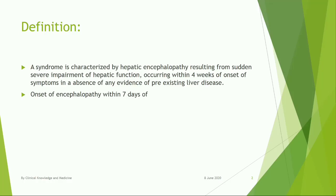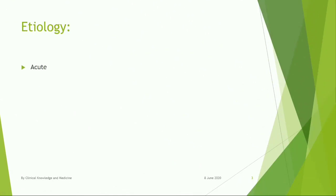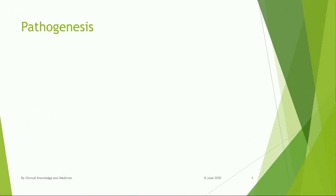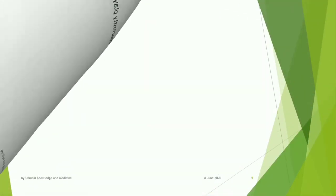Onset of encephalopathy within 7 days of symptoms is known as hyperacute hepatic failure. Etiology includes: Acute Viral Hepatitis B and E; hepatotoxic drugs like Cyclosporine, Methotrexate, and Valproic Acid; Pregnancy; Autoimmune Hepatitis; Wilson's Disease; Shock; and Poisoning. Pathogenesis: Elevated ammonia in the blood apparently plays a role in the pathogenesis of hepatic encephalopathy.